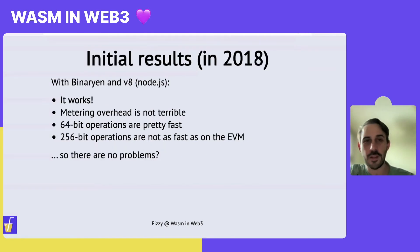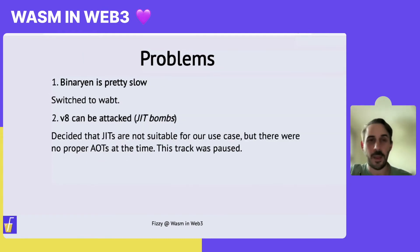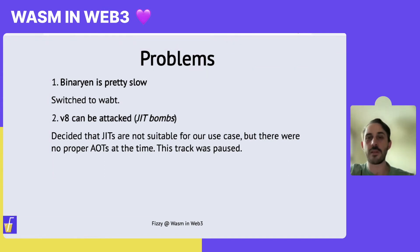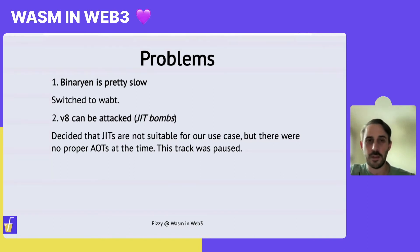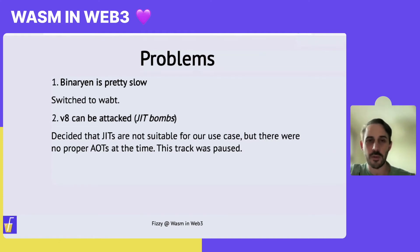Of course there were problems. V8 was pretty fast — but we found some issues with V8, which at the time was a JIT. With JIT, the problem case we found is that an attacker could craft a piece of Wasm code which increases the compilation time into native code excessively — basically a case where somebody could DOS attack the network. At the time there weren't any stable ahead-of-time compilers, so we decided we had to pause the work. We didn't want to write a VM at all.